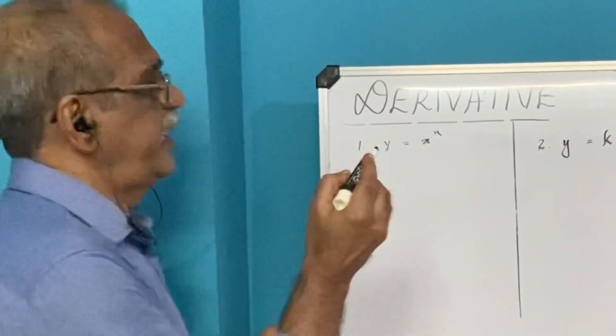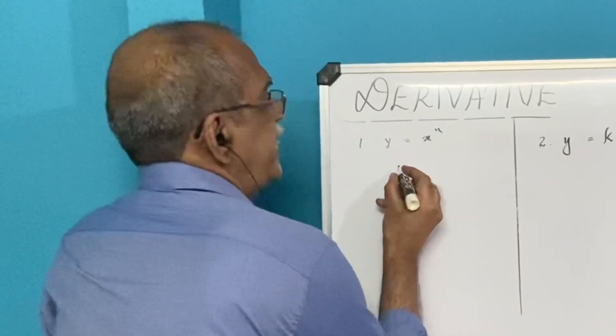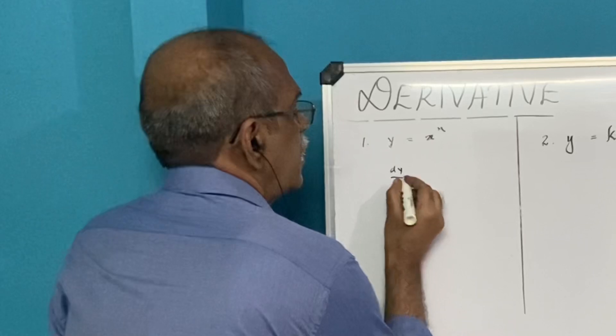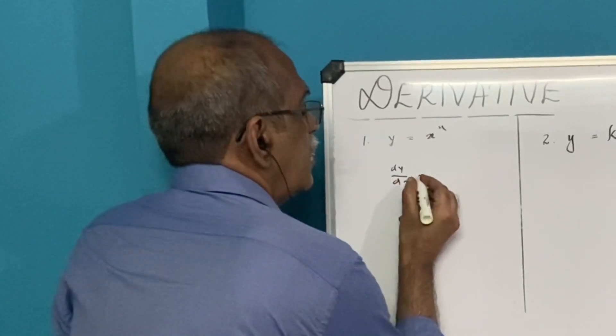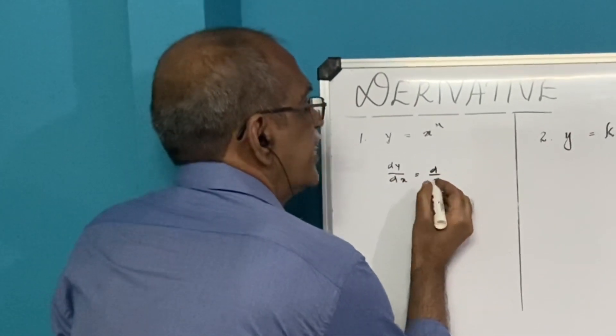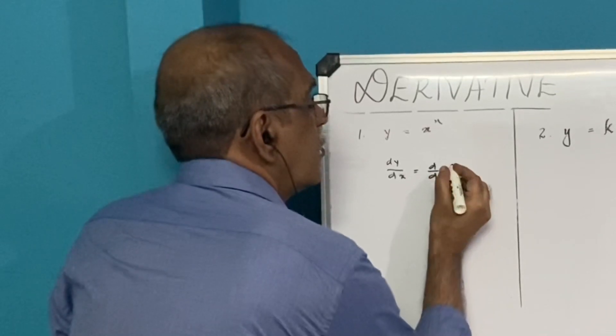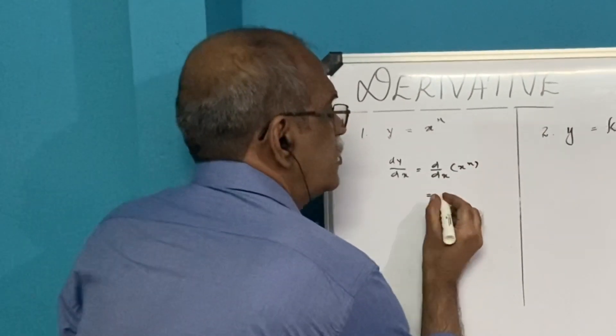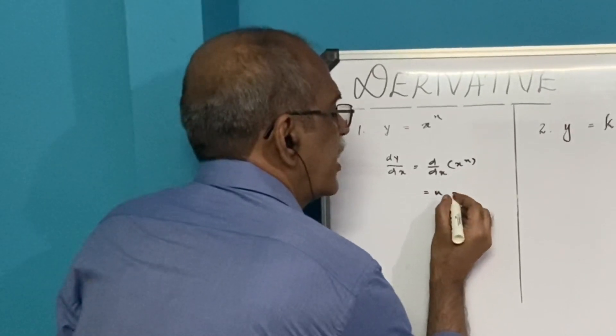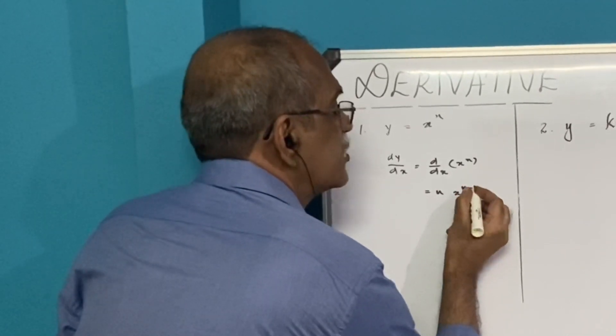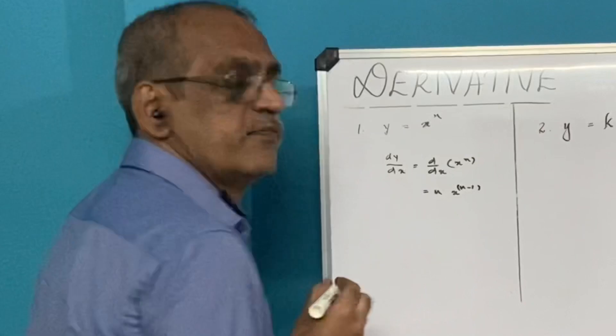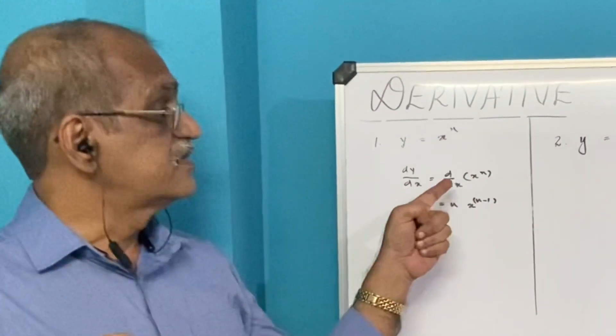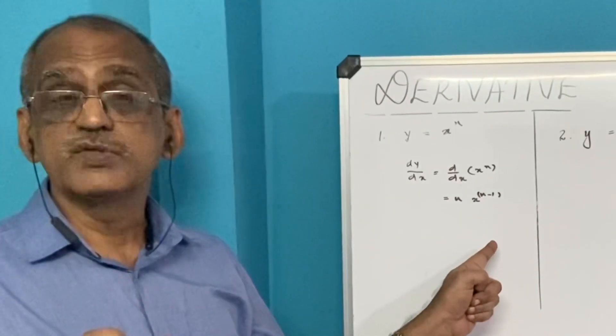When we come to the first one, y equals x raised to n, then dy/dx will be equal to d/dx of x raised to n, which is equal to n times x raised to n minus 1.